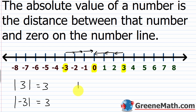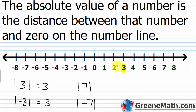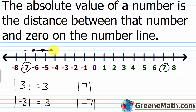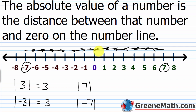For example, the absolute value of seven and the absolute value of negative seven are both seven — in each case you travel seven units to get to zero. Another key point: the absolute value of a number is never going to be negative. It's always zero or a positive value, because absolute value represents a distance, and distance is never negative.